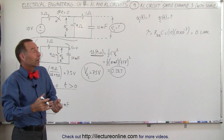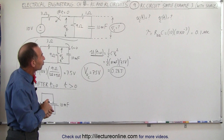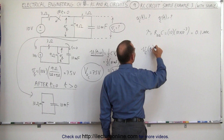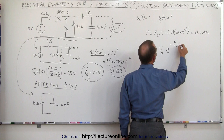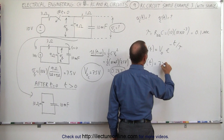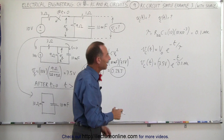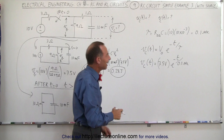We have a time constant of 0.1 seconds, which means after five time constants the capacitor would be fully discharged — in this case, half a second. The voltage across the capacitor as a function of time is equal to the initial voltage times e to the minus T over tau. The initial voltage is 7.5 volts, so V(t) equals 7.5 volts times e to the minus T over 0.1 seconds, or equivalently e to the minus 10T.